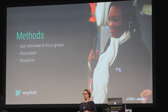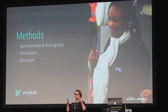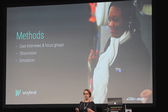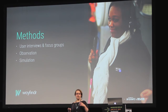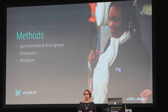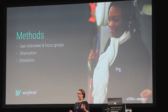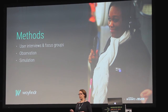They also used simulation. The team got a set of goggles that could simulate different types of vision impairments, so the researchers and designers themselves were able to see exactly what vision-impaired users were going through. This meant their ability to feel how the users were feeling was much higher, making them much more able to create a solution that worked well.